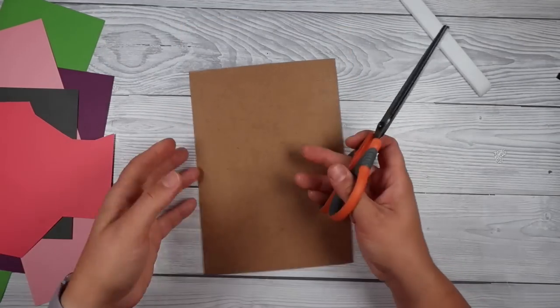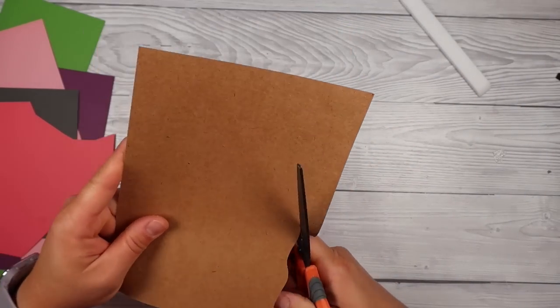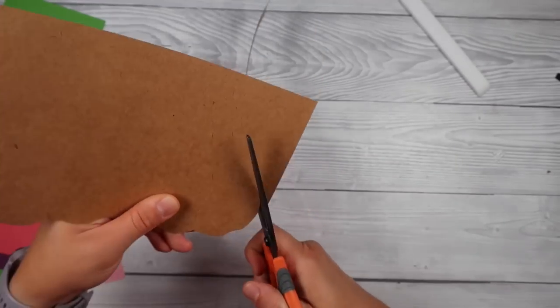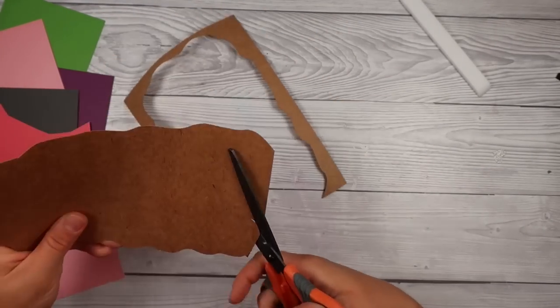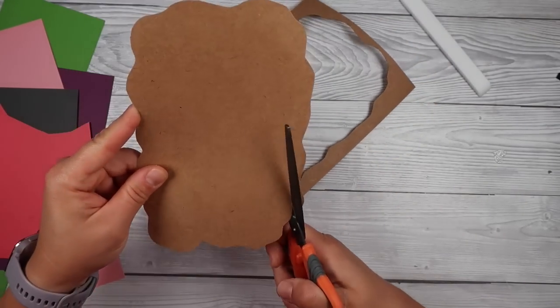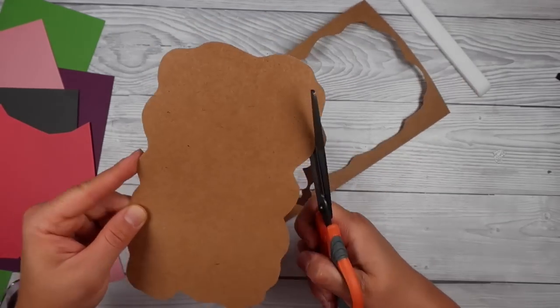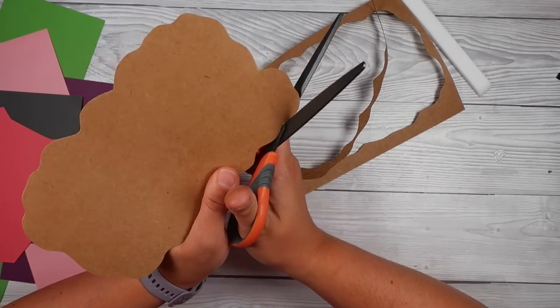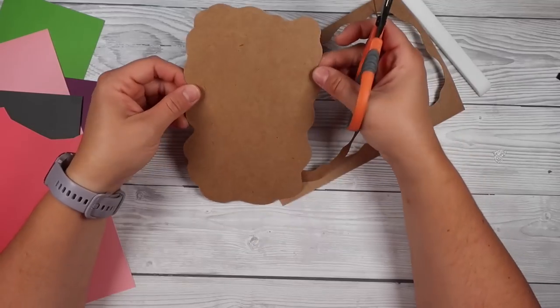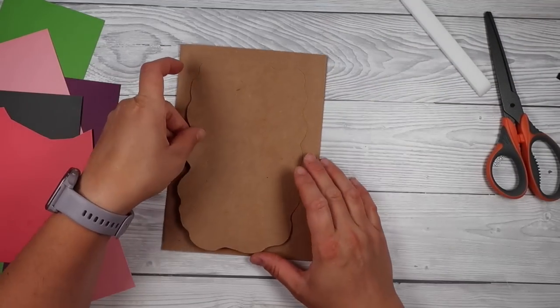The first project is going to be all about the imperfection and wonky, but I will show you the version you can do if you want a more clean cut version using up your scraps. I've got some pinks and purples and greens and some craft cardstock. What I want to do first is make myself a little frame.